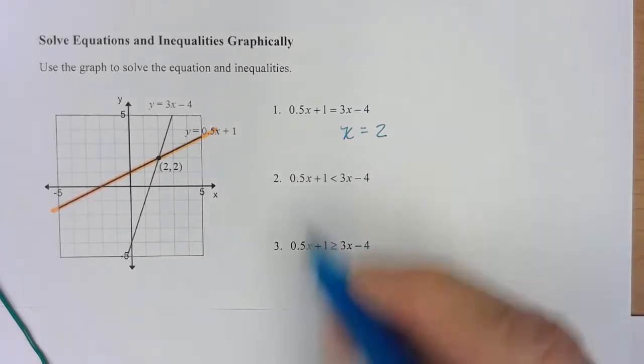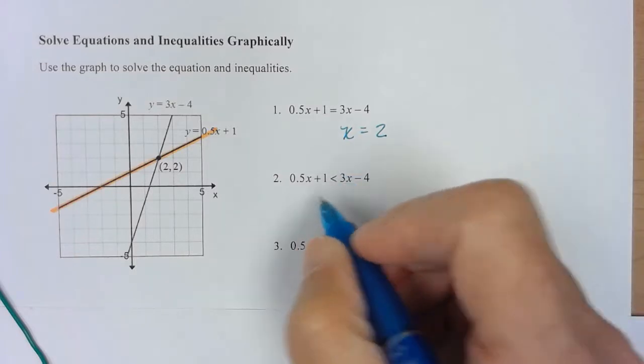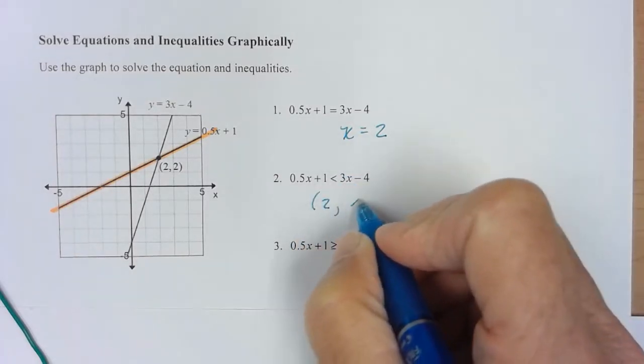So where is this one, y value wise, smaller than this one? If you write it in interval notation, it would be from 2 to infinity.